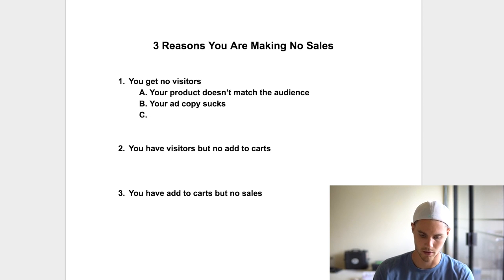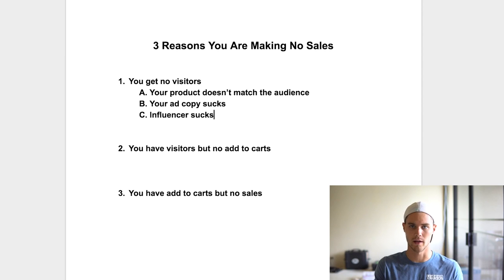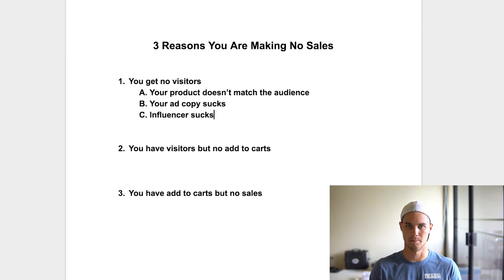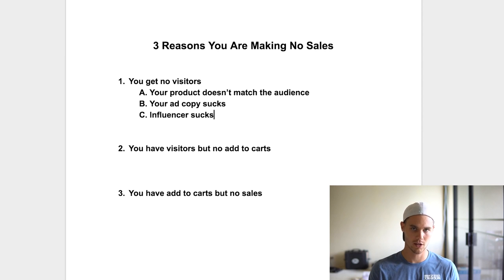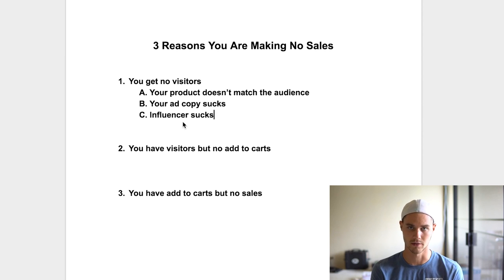Number three: your influencer situation. There are two things that can go wrong. Maybe the influencer is great with awesome engagement, but your product isn't a good fit for them — so you just need to find a new influencer more aligned with your product. Or number two, the influencer has bot followers or is in engagement groups, where their numbers are bigger than they actually are and they're not driving purchases. You really have to make sure you're running traffic to legitimate pages. I've talked about how to find good influencers in other videos if you want to check those out.